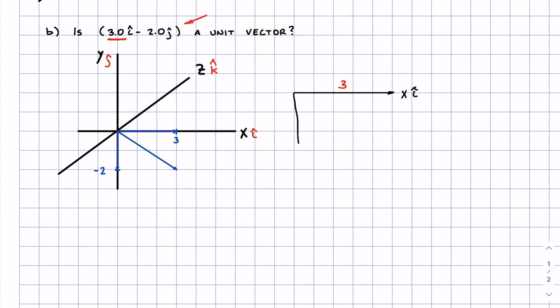And downwards, because of that negative sign before the 2, downwards in the y direction or in the j direction, we have a magnitude of 2. So that's what I'll note here.